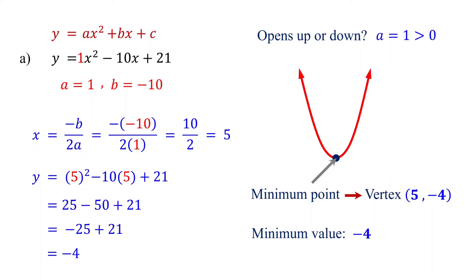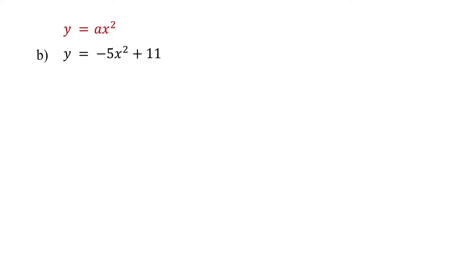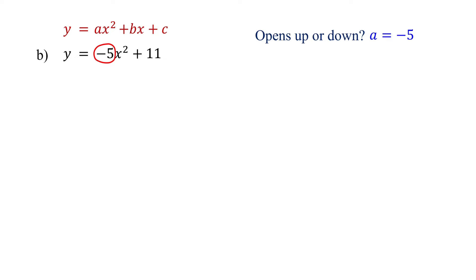Now it's your turn. Please pause the video and give it a try. First, determine whether the parabola opens upward or downward. a is negative 5, which is less than 0, so the parabola opens downward.